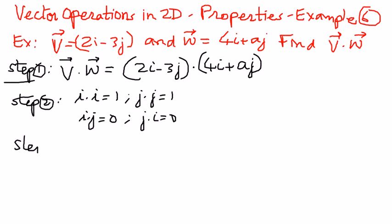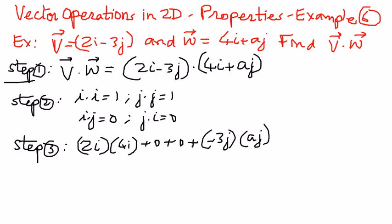As step number three, we perform the operation. 2i times 4i, then 2i times aj which goes to 0, then negative 3j times 4i which also goes to 0, and finally negative 3j times aj.